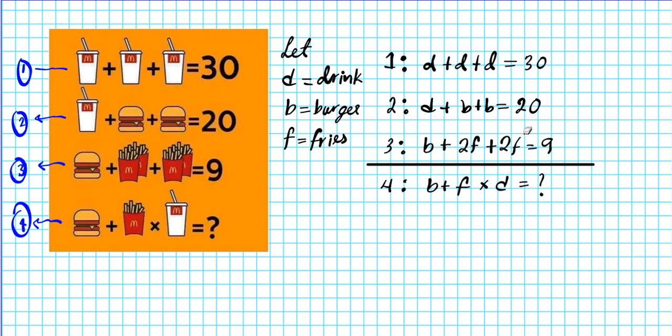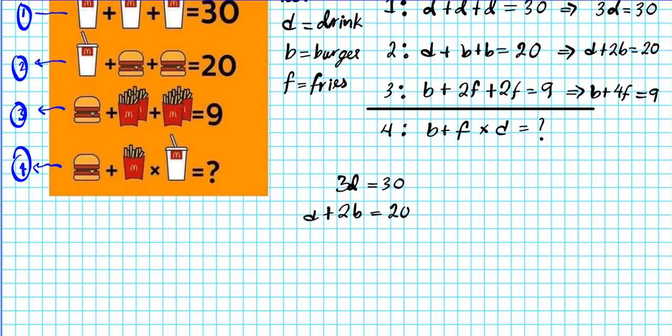This system of equations might look complicated, but when you simplify it, it's not as complicated as it seems. The first one can be simplified into 3D equals 30. And then the second one can be simplified into D plus 2B equals 20. The third one can be simplified into B plus 4F, 2F plus 2F, you just add the coefficients, equals 9.